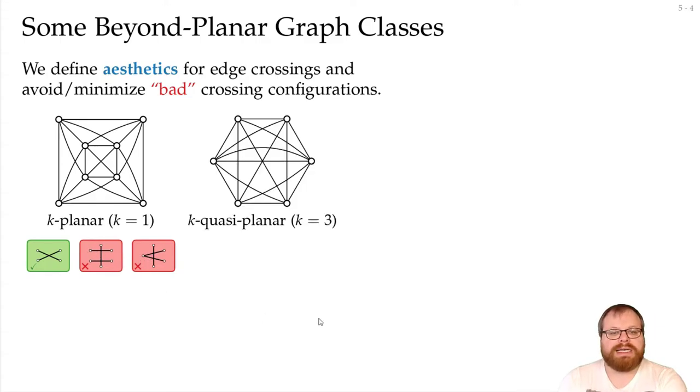There are k-quasi-planar graphs. Here we can have many crossings per edge, but we cannot have k edges that cross pairwise. So for k equals 3, we cannot have three edges that pairwise cross. For k equals 2, we cannot have two edges that pairwise cross. That means for k equals 2, it's just the planar graphs.